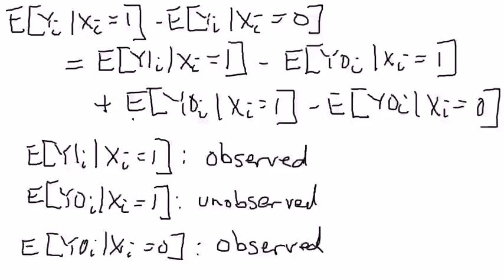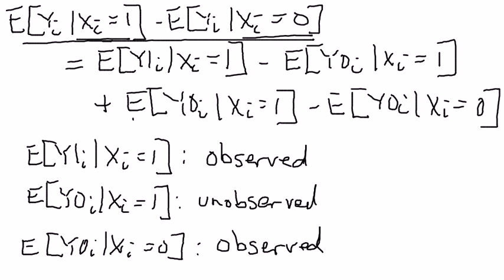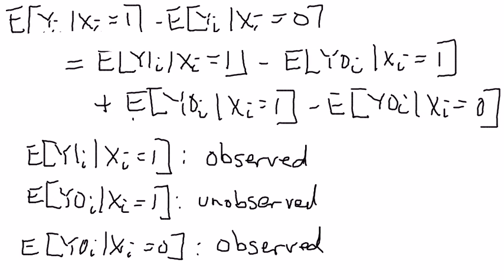This is the third video on causal inference, talking about trying to figure out what the effect of being an econ major is on starting salary. This is essentially where we left it off last time, where this first difference between these two expected values is the observed difference in starting salaries between the econ majors and the non-econ majors. Now the point I made last time was you can go ahead and break that up into two things.